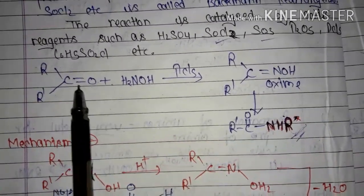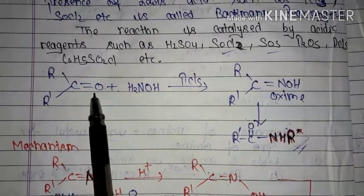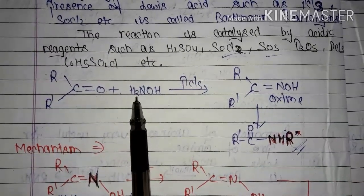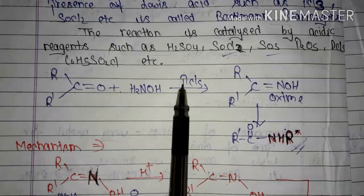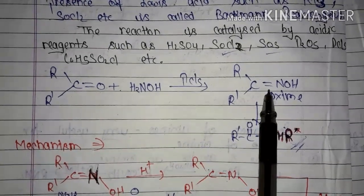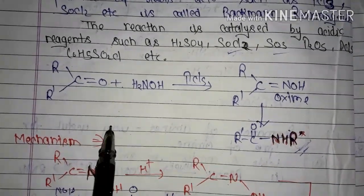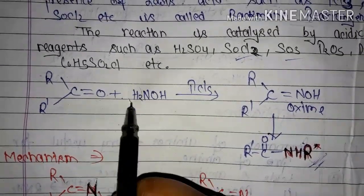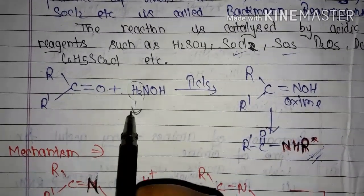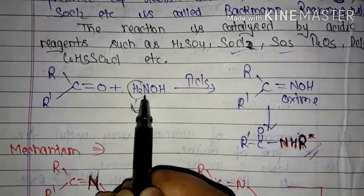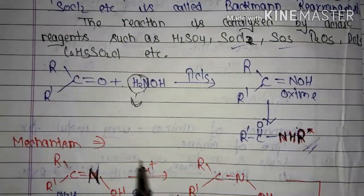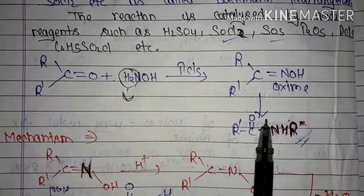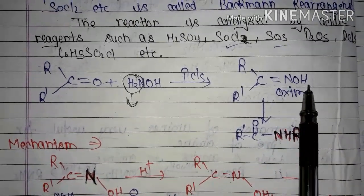This is the reaction. Here you can see R-C=O. The reaction is with H2NOH in presence of Lewis acid. As you can see, migration occurs. Here you will get an oxime compound. The H2 will come out, and O will come out, so H2O is removed and you get N-OH. Then in the next step you will get this compound.